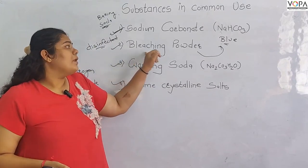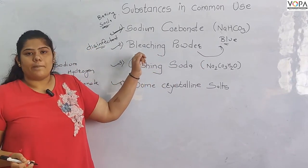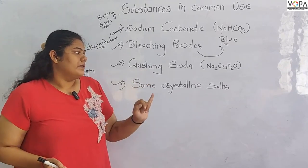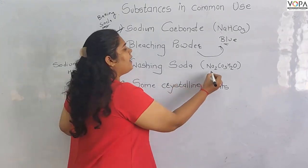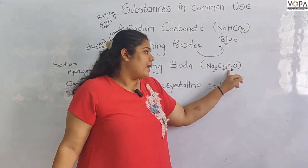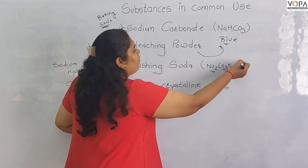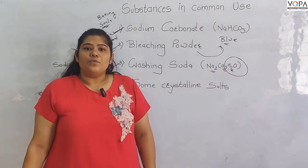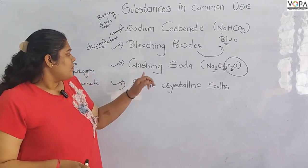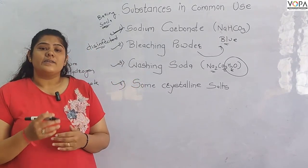The common use of chemical substances includes bleaching powder. We also need washing soda. What is the formula of washing soda? It is Na2CO3·H2O — sodium carbonate and water. Washing soda is related to water. Washing soda is used for cleaning.